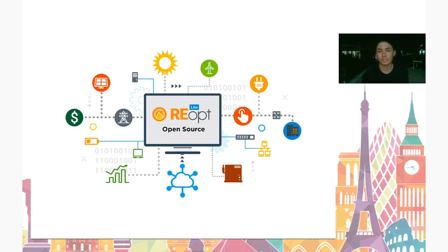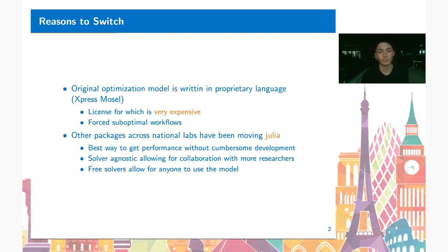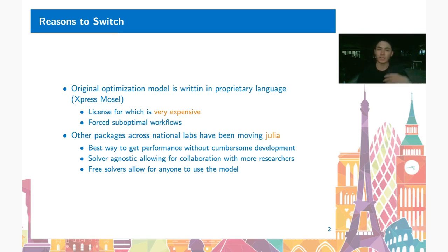At the heart of all of this is a mixed-integer program that we're looking to transition over to Julia. The original optimization model was written in a proprietary language called ExpressMOSM, and this proprietary language has a very expensive price tag attached, which creates barriers to entry for various people we'd like to collaborate with. It also forces us to use some sub-optimal workflows — our Python API was saving data to disk to be read in by the optimization model, and then saving all of that data back to be sent to the user. It was just a clunky handshake we were looking to get past.